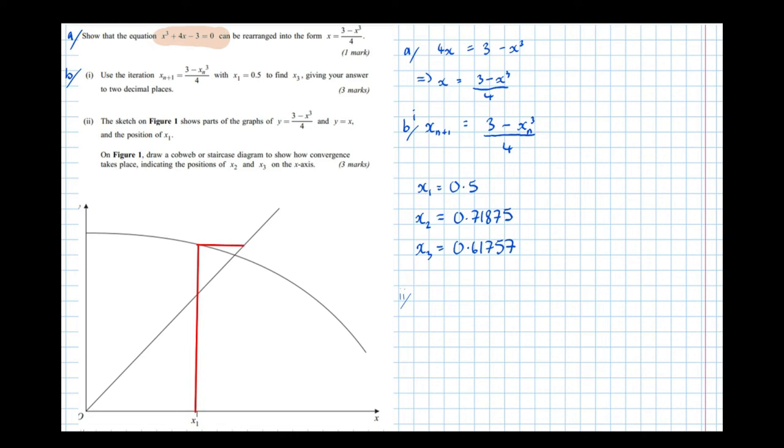horizontally to y equals x. And there we have it. There's our next iterate, our next guess, which should be, and is, closer to the root than before. So x2.